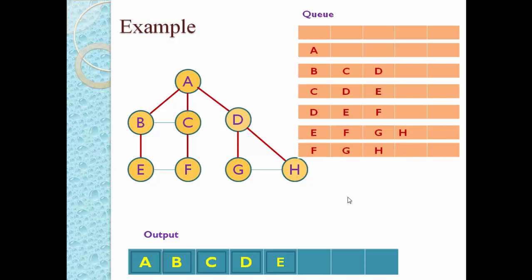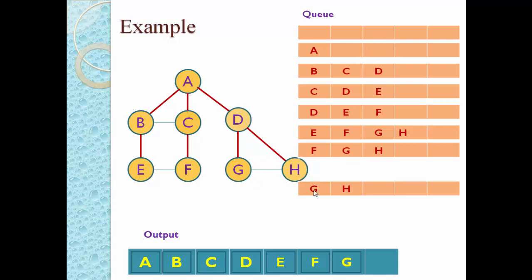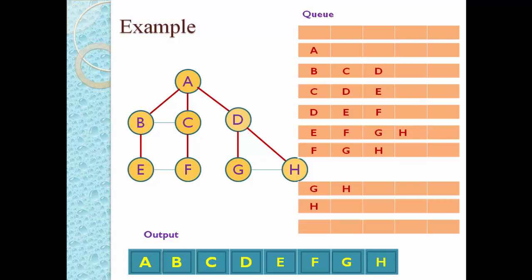Perform dequeue: F is deleted and printed as output. Explore F — its neighbors are C and E, both already visited, so nothing is added to the queue. The queue now has G and H. Perform dequeue: G is deleted and printed as output. Explore G — its neighbors are D and H, both already visited. The queue now has only H. Perform dequeue: H is deleted and printed as output. The queue is now empty — all nodes have been visited.